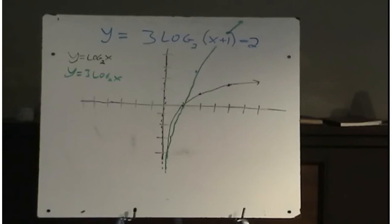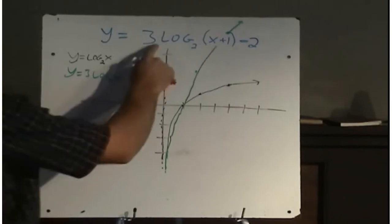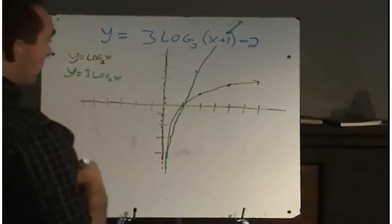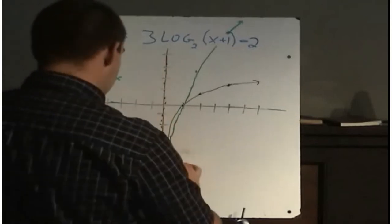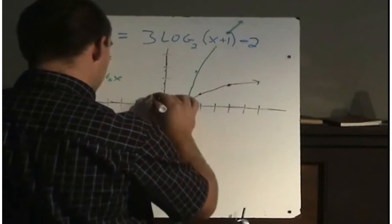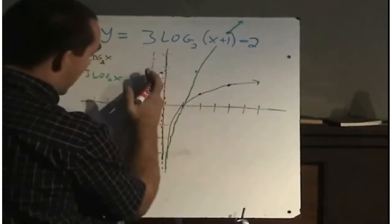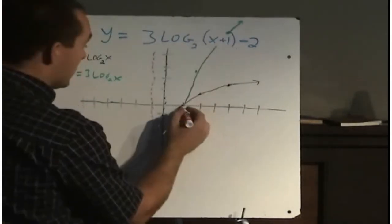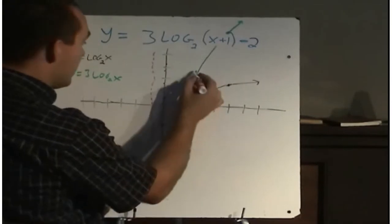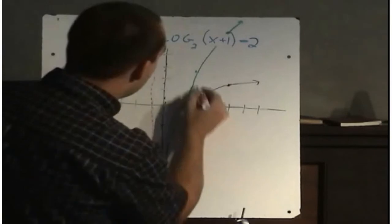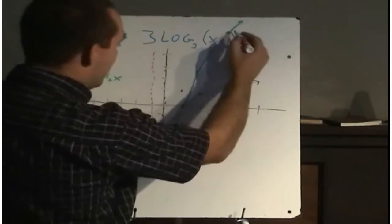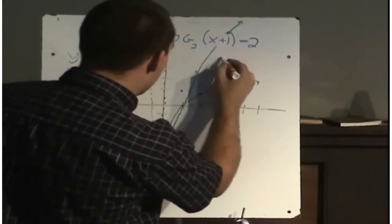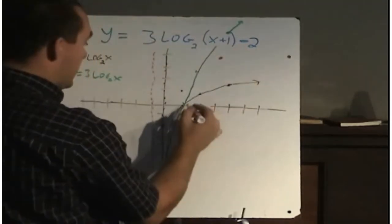We've vertically expanded by a factor of 3. Now we're going to move it left 1 and down 2 in one step. Taking my asymptote and moving it left 1 and down 2 — moving it down 2 won't affect the asymptote. Applying this to our three key points: move left 1 and down 2. The point at 4, 6 moves left 1 to x equals 3 and down 2 to y equals 4.